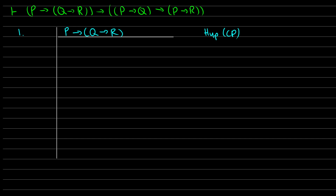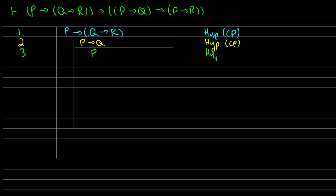In line two I'm going to assume P→Q — another hypothesis for CP. And finally in line three I'll assume P, once again for CP. So we've essentially just assumed all of the antecedents we'll need.